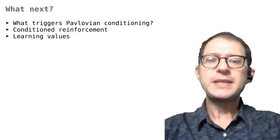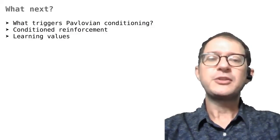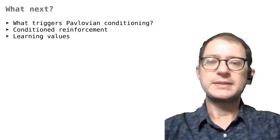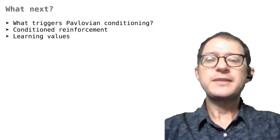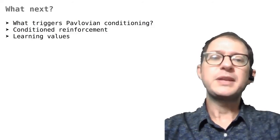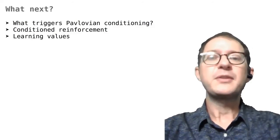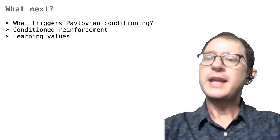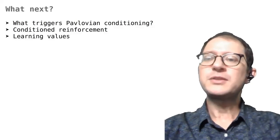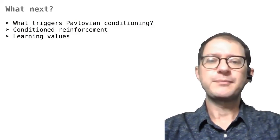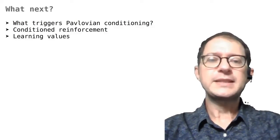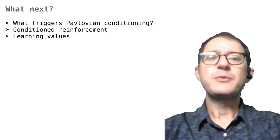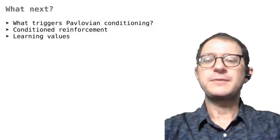And this means that the Pavlovian conditioning learning curve predicted by the Rescorla-Wagner model is smooth rather than stepwise. But we have also seen that this picture might actually be too simple even for Pavlovian conditioning. There might be stepwise changes in Pavlovian conditioning too, and this is covered in the lesson What Triggers Pavlovian Conditioning. Other lessons to study next are those about conditioned reinforcement and about learning values, which will be similar to learning associative strength.